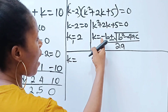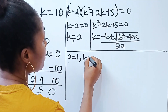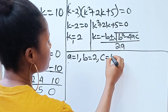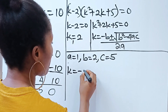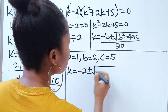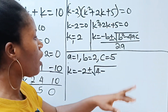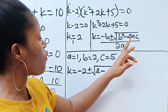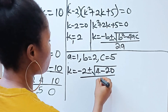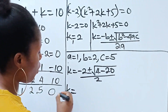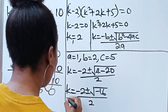Now we identify: a is the coefficient of k squared which is 1, b is the coefficient of k which is 2, and c is the constant which is 5. Substituting: k equals negative 2 plus or minus the square root of 2 squared minus 4 times 1 times 5, which is 4 minus 20, divided by 2 times 1. That gives k equals negative 2 plus or minus the square root of negative 16, divided by 2.